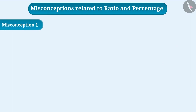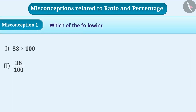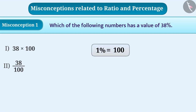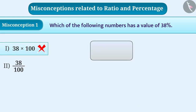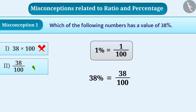Misconception 1: Which of the following numbers has a value of 38 percent? Some children cannot understand the percent sign. They think that percent means hundred, and 38 percent means 38 multiplied by 100. With this understanding, they give option 1 as the answer, which is wrong. Always remember that percent means one by hundred, therefore 38 percent equals 38 divided by 100, so option 2 is the right answer.